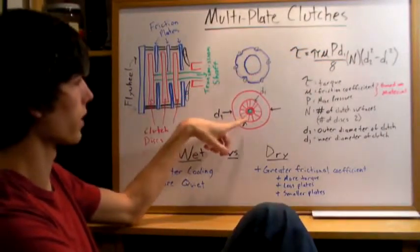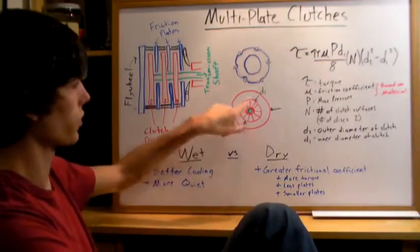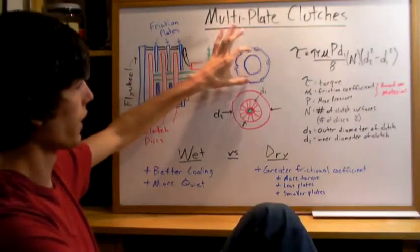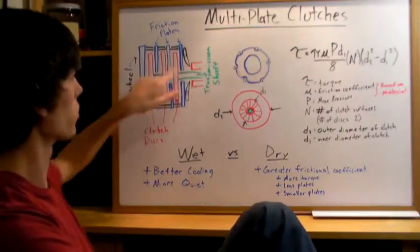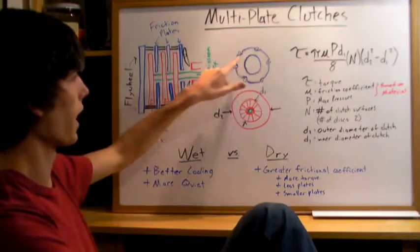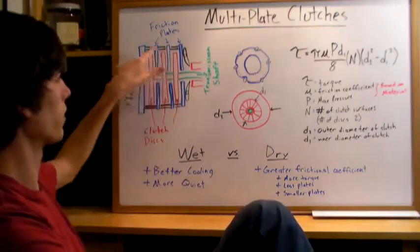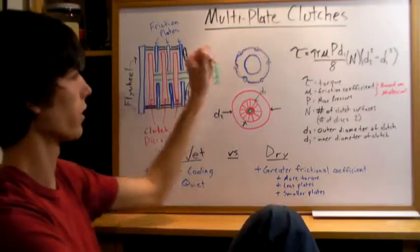D1 is going to be the inner diameter of this clutch disc. This clutch disc here, I just drew to show how that fits. That's going to go in between all these friction plates, and it's going to be small enough so that these metal rods don't touch it, and so they can rotate on their own.